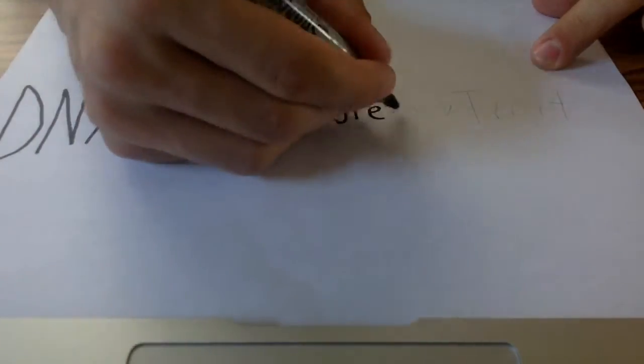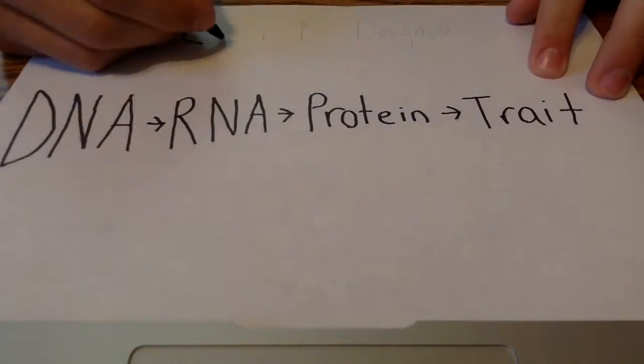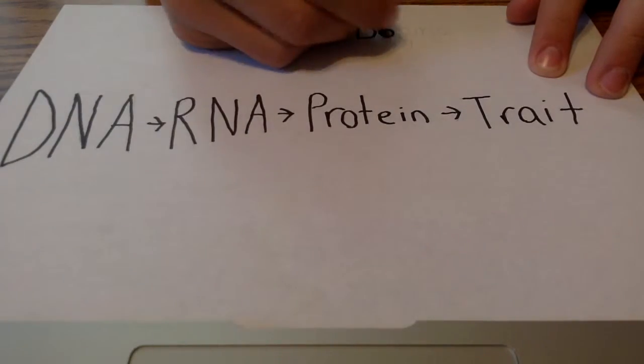The central dogma of molecular biology states that DNA goes to RNA, which goes to protein, and finally to trait. Transcription takes place in between DNA and RNA.